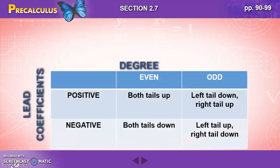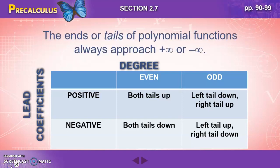Now here's how we can kind of categorize the behavior of our polynomials by looking at some characteristics. The ends or tails of a polynomial function always approach positive infinity or negative infinity. Remember we said the domain is all real numbers, and so our tails are going to keep on going. And we can use the leading coefficients and the type of degree to get an idea of which direction those tails are going.